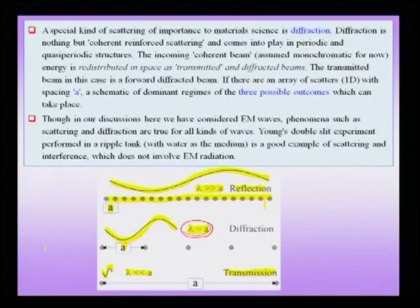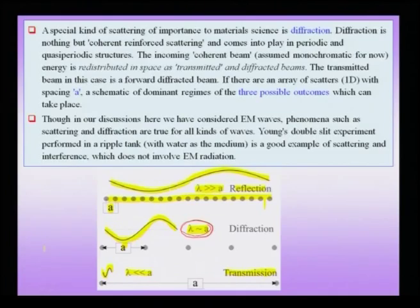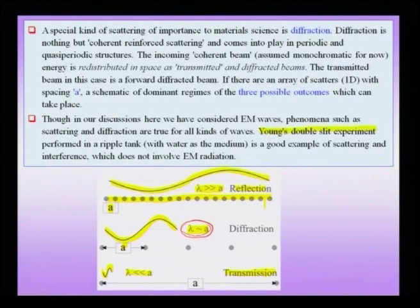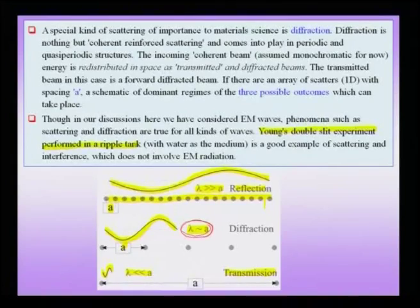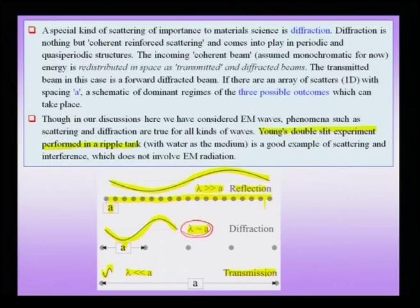These three possible outcomes — transmission, reflection, and diffraction — must be kept in mind. Diffraction and transmission are more universal than just electromagnetic waves: Young's double-slit experiment can be performed in a ripple tank using water waves and wooden blocks as scatterers. Mechanical transverse waves on a water surface show phenomena like diffraction and interference. These are universal phenomena occurring in three regimes.